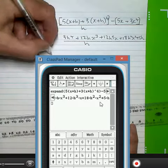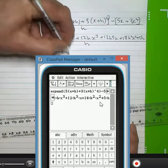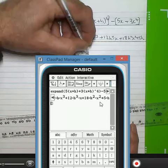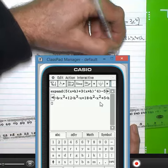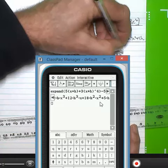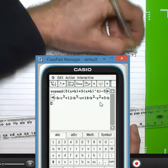Dividing that through, I get 3h cubed, plus 12h to the power of three, plus 12h squared x, plus 8h squared x, plus 5h.